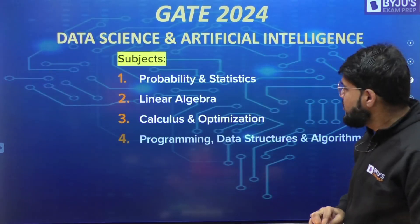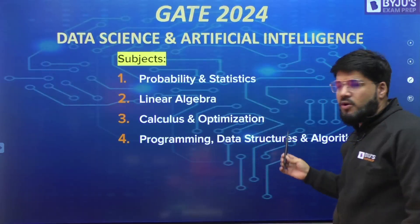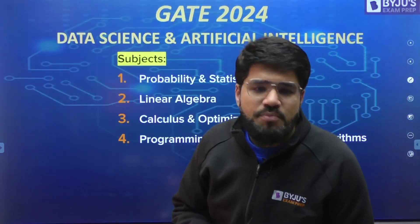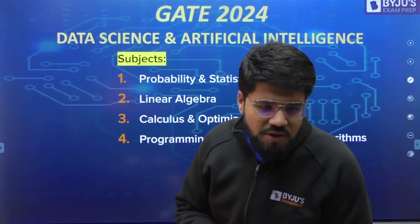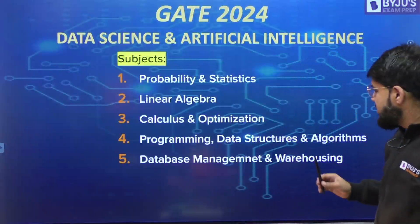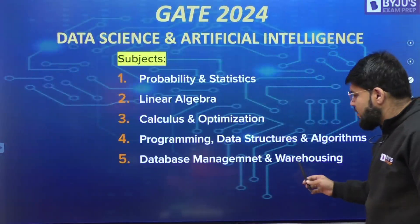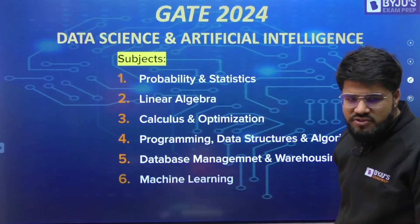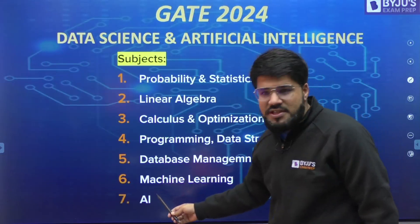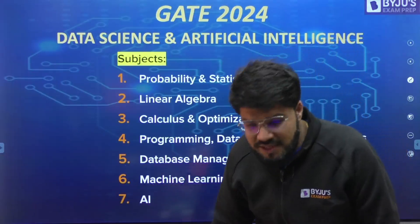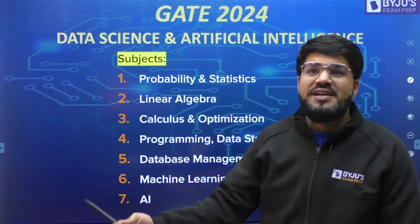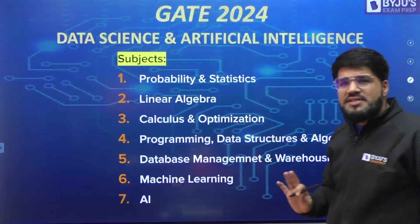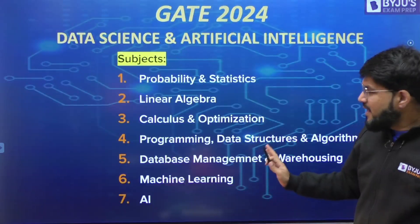Moving ahead, the remaining subjects are: Programming, Data Structures and Algorithms — where programming is in Python, not C; Database Management and Warehousing — where warehousing is the extra part beyond regular CS; and Machine Learning and Artificial Intelligence — which regular CS students don't normally study. So these are the seven subjects in the 85% technical portion.